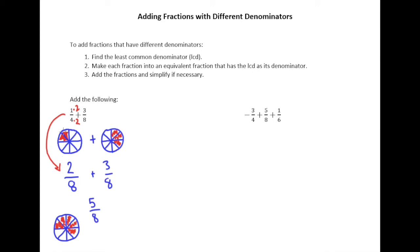To go through this procedure here, we find the least common denominator. So here our least common denominator was eight. It was the smallest number that both denominators went into evenly. We did that and then we made each fraction into an equivalent fraction that has the LCD as its denominator. Again there was nothing to do with three-eighths, it was fine.